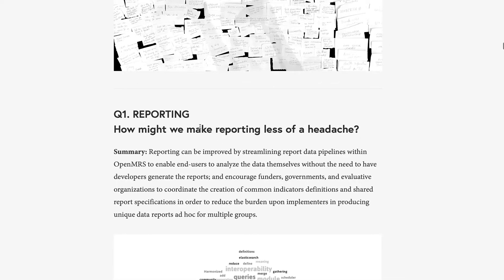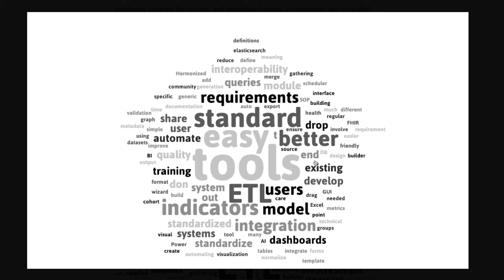Let's go through that first prompt. The first prompt was on the theme of reporting: how might we make reporting less of a headache? The answer was that reporting can be improved by streamlining the reporting pipeline, meaning we need tools where it's easy to take data in from the clinical form, aggregate it, and ultimately report it. There was a lot of talk about trying to encourage different funders, governments, and disease surveillance and evaluative organizations to create standards, shared indicator definitions, and shared reporting requirements, in order to reduce the burden placed upon implementing partners in meeting their data requirements.